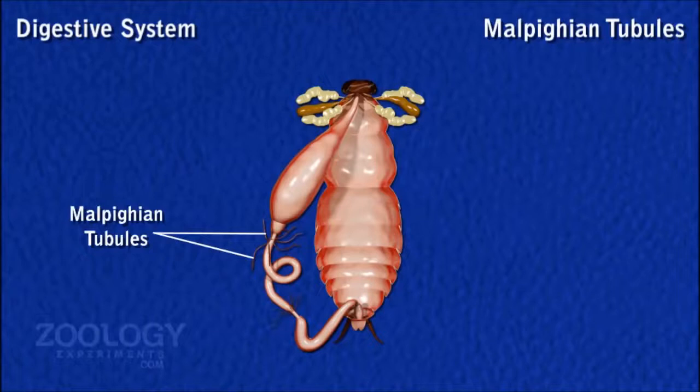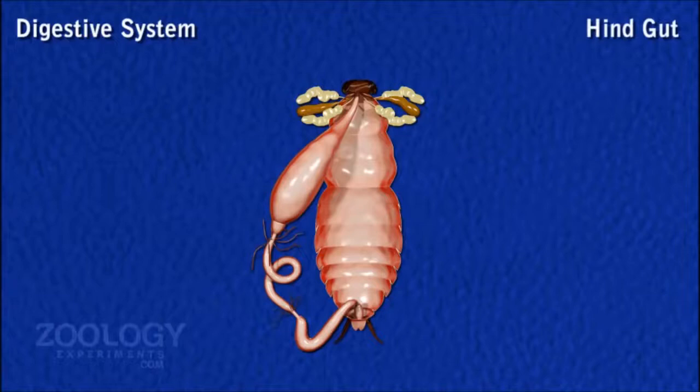Malpighian Tubules. From the junction of mid-gut and hindgut, 80 to 150 very narrow, thread-like, yellow-colored blind tubules project freely into the haemocoel. These are called Malpighian tubules.